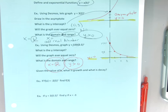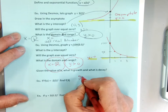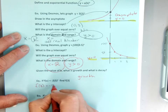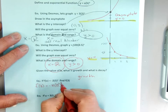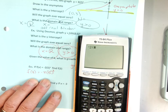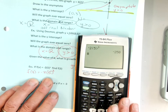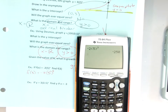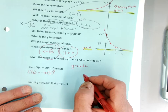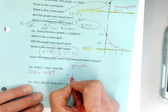Someone says find f(3), so I'll plug 3 into the decay example. I go f(3) equals negative 2 times 5 to the third power. Using my calculator, I get a negative number. But things can grow exponentially in a negative way — think about the national debt, it's growing exponentially, just not at a good rate.